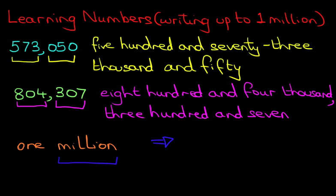Now, how do we write this in numerals? Well, we write down one because it's one million. Then we put a comma. We put zero, zero, zero. Another comma, zero, zero, zero. So there are three zeros and another three zeros.